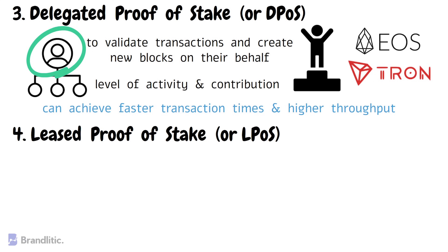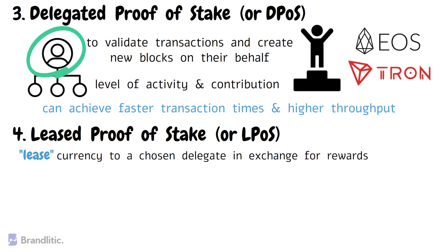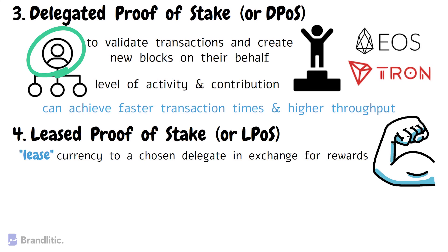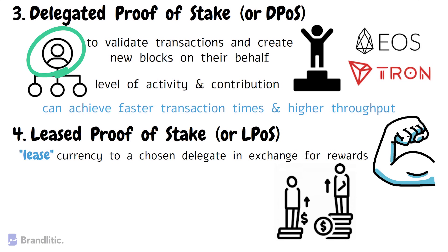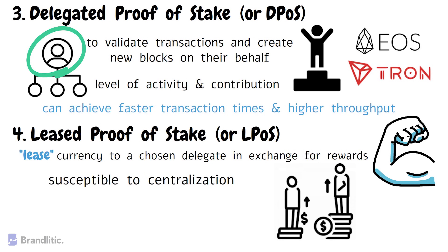Leased Proof of Stake, or LPOS, is a small modification of the Delegated Proof of Stake consensus algorithm that allows users to lease their currency to a chosen delegate in exchange for rewards. The delegate then uses these leased coins to increase their voting power and become a more prominent validator in the network. This leasing system helps to promote decentralization by allowing smaller token holders to participate in the validation process and receive rewards even if they don't have the resources to become a delegate themselves. However, LPOS can still be susceptible to centralization if a small group of delegates control a significant amount of leased coins.